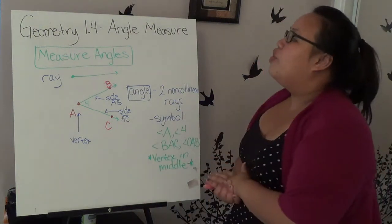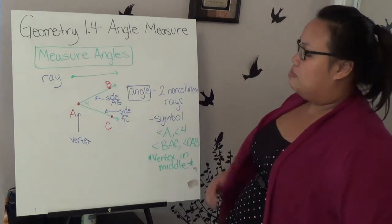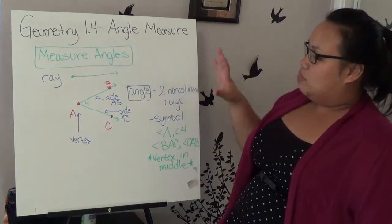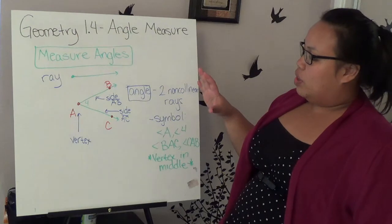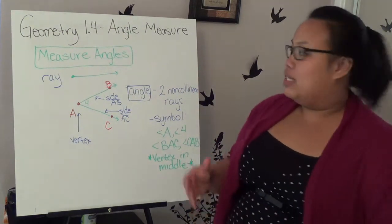On section 1.4 in geometry, we're dealing with angle measures. The measure of the angles is basically, you're going to be using a protractor, but in class is when we're going to discuss how to use it exactly.